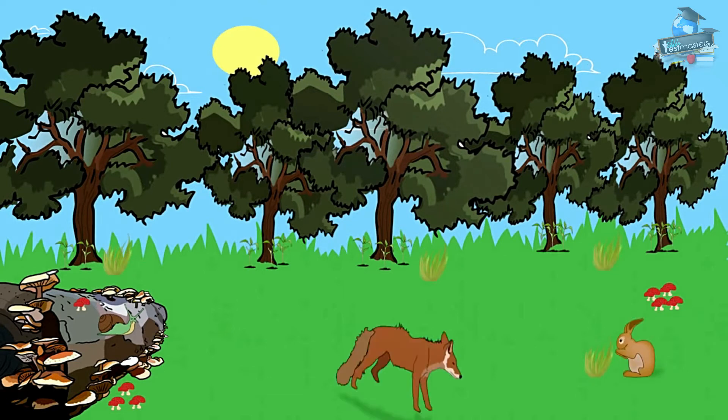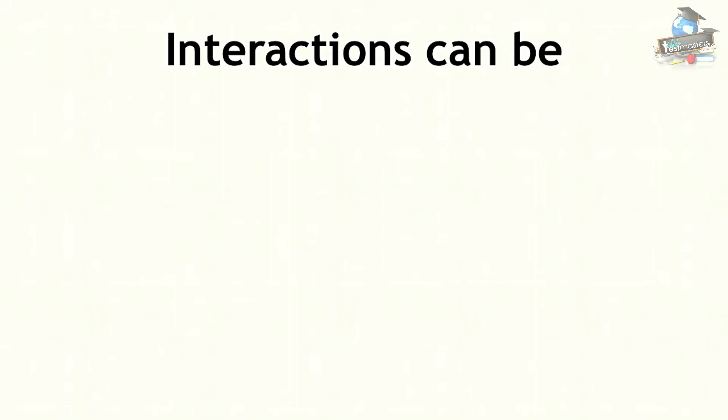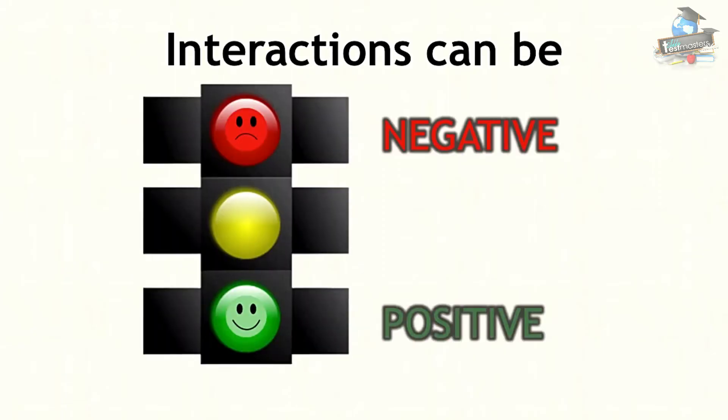All species in a community will interact or affect each other in different ways, and interactions can be positive, negative, or neutral.